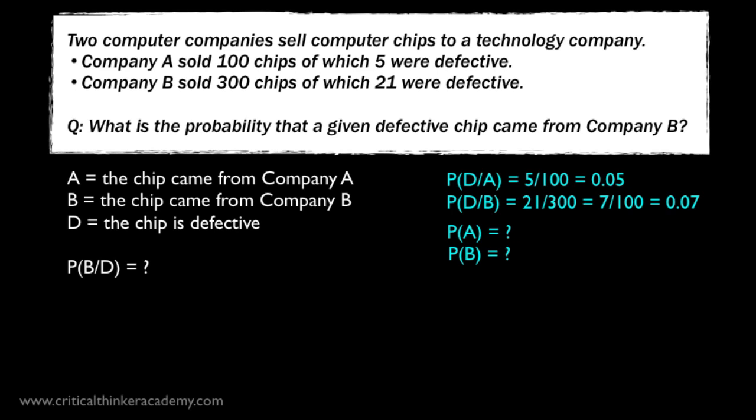The question says that 400 chips in total were bought, with 100 coming from Company A, and 300 coming from Company B. So any random chip is more likely to have come from B than from A. More precisely, the prior probability of a chip coming from Company A is 0.25, or 25%, and from Company B, it's 0.75, or 75%. These prior probabilities are also called base rates.